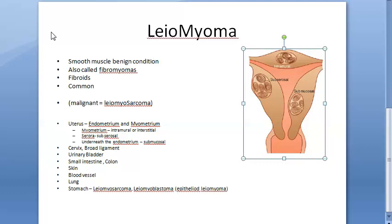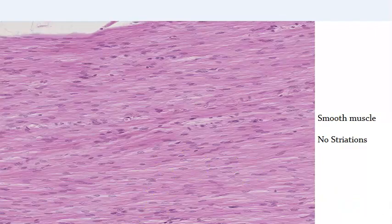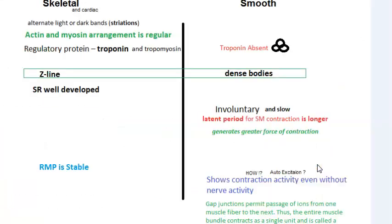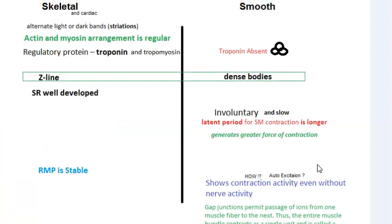As an introduction to smooth muscle: smooth muscle has no striations. What you basically know about smooth muscles is that there is a calcium-calmodulin complex involved. Smooth muscles follow plasticity - remember that.